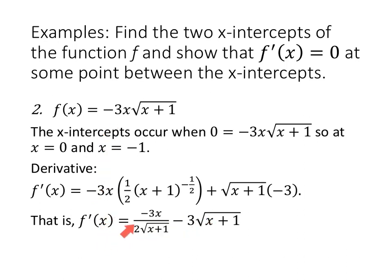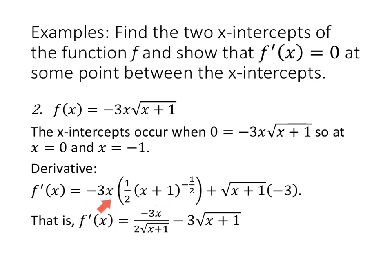For the derivative, using the product rule: first, negative three X, times the derivative of the second, which is one half (X plus one) to the negative one half — don't forget the derivative of the inside, which is one — plus the second, square root of (X plus one), times the derivative of the first, negative three. Simplifying, the derivative becomes negative three X over two times the square root of (X plus one), minus three times the square root of (X plus one).